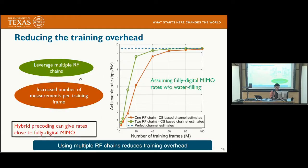We also plot the achievable rate, comparing a fully digital MIMO system with perfect channel knowledge (dotted lines) against the rates given by the estimated channel matrices (green and red curves, without water filling). Although fully digital MIMO cannot be supported at millimeter wave, hybrid precoding can be used with these channel estimates to achieve rates close to the fully digital case. The key takeaway is that multiple RF chains reduce training overhead, and the estimation error is small enough that the achievable rate approaches the ideal case.